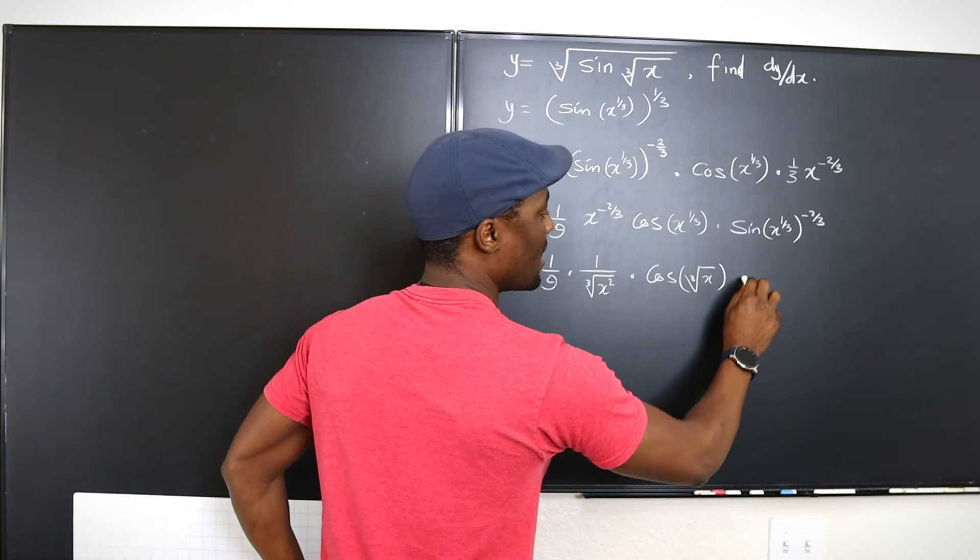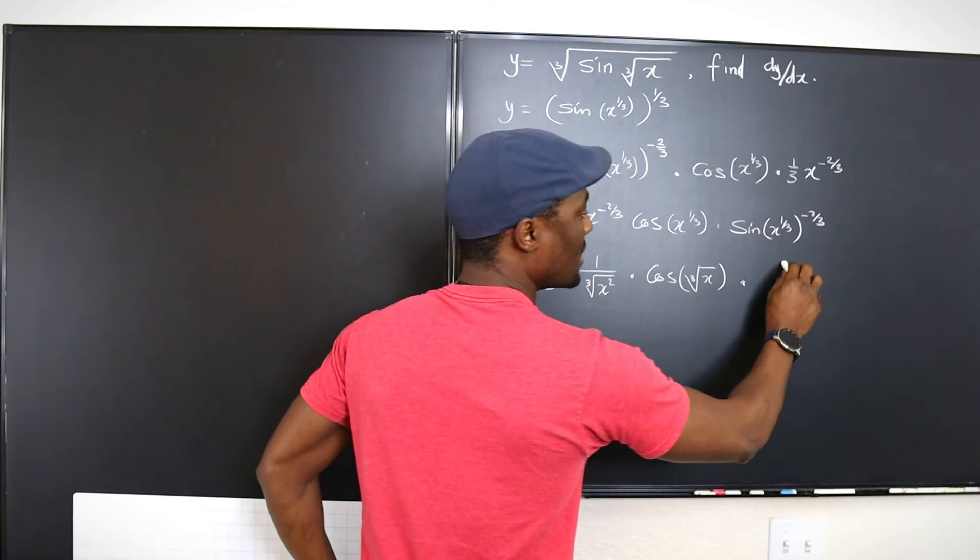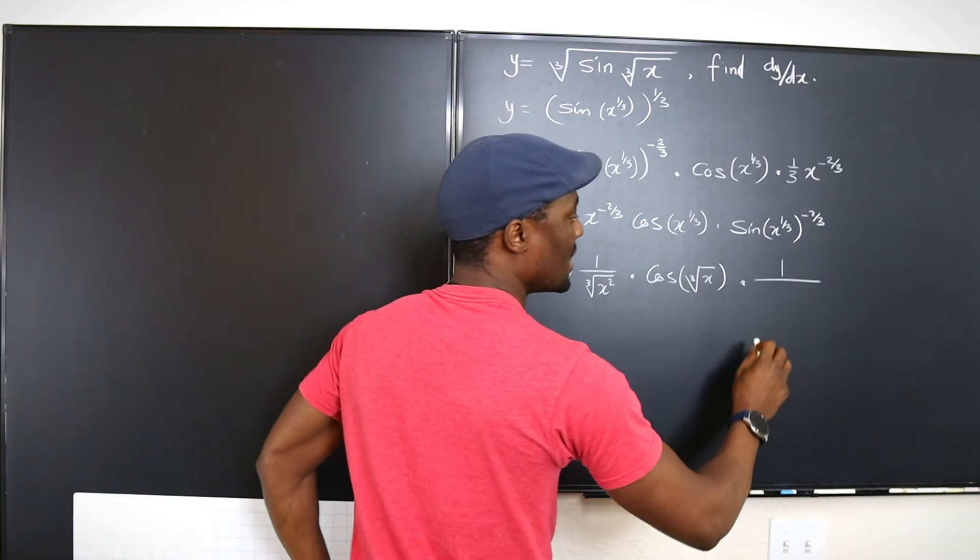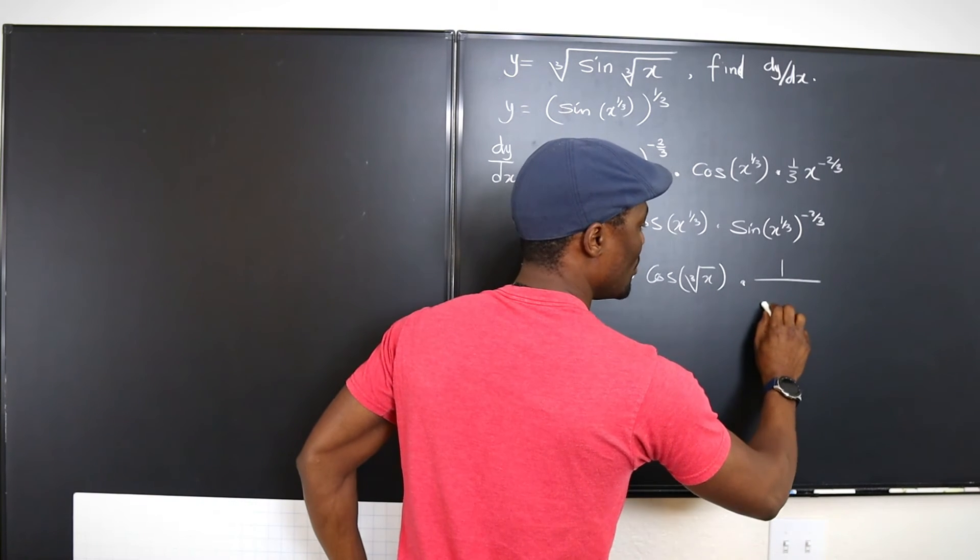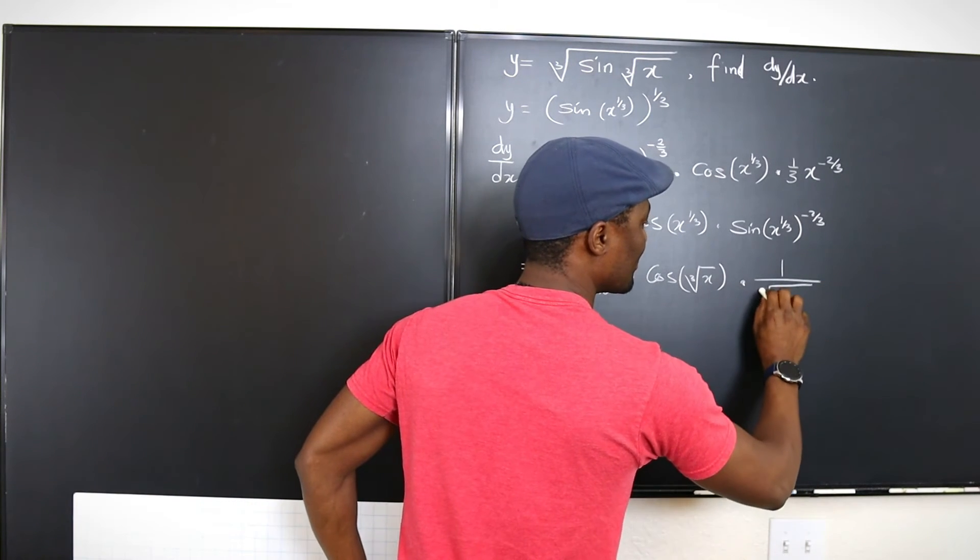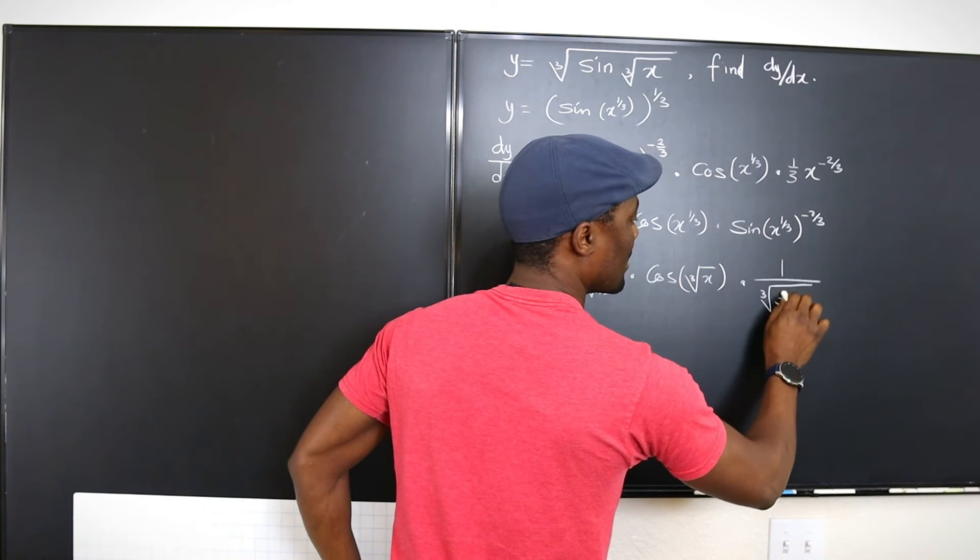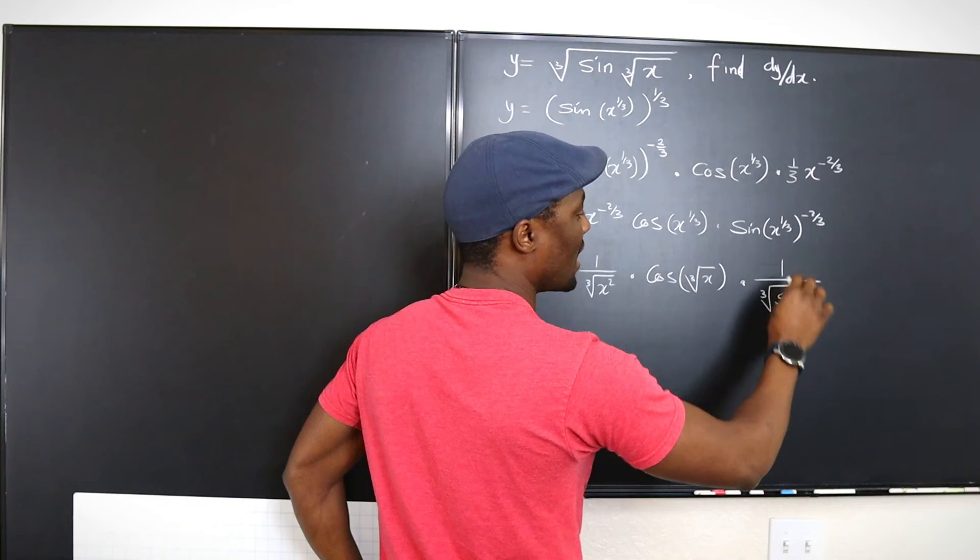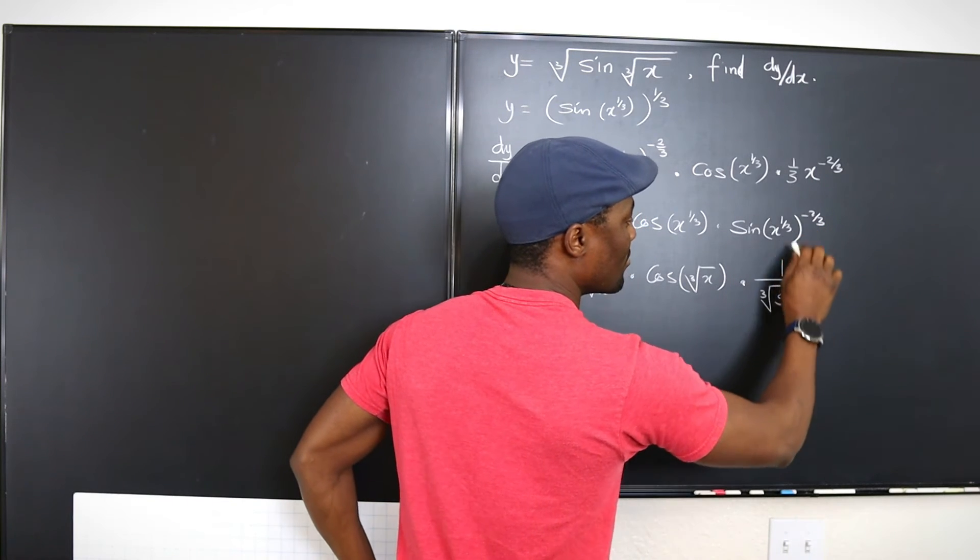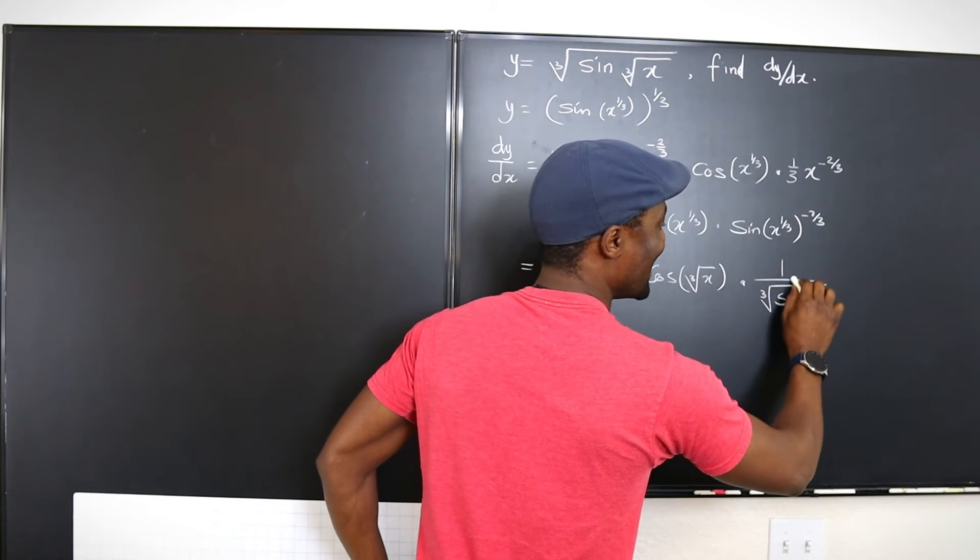You can write it this way multiplied by one over, this is going to be the cube root of sine, the cube root of sin x. This is going to be really funny.